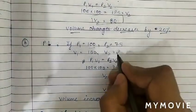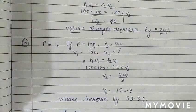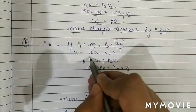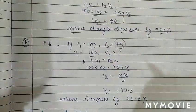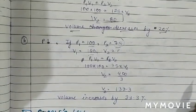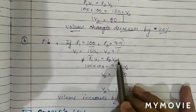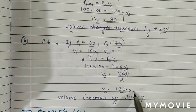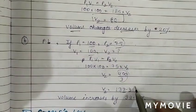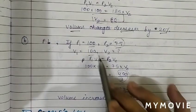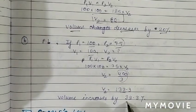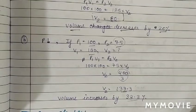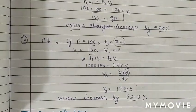Second case — pressure decreases by 25%: P₁ = 100, P₂ = 75, V₁ = 100. Applying P₁V₁ = P₂V₂ gives V₂ = 400/3 ≈ 133.3. Volume increases from 100 to 133.3, meaning an increase of approximately 33.3 percent. This completes the Boyle's Law numerical.